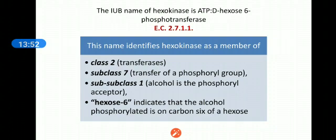The final 6 indicates that the alcohol phosphorylated is on carbon number 6 of hexose.